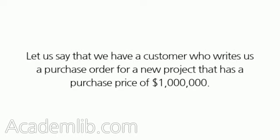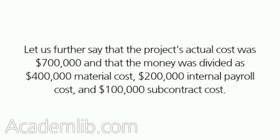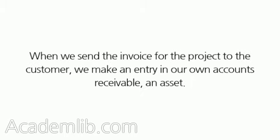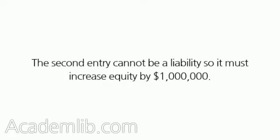Let us say that we have a customer who writes us a purchase order for a new project with a purchase price of $1,000,000. The project's actual cost was $700,000, divided as $400,000 material cost, $200,000 internal payroll cost, and $100,000 subcontract cost. Starting with the billing of the customer: when we send the invoice to the customer, we make an entry in our own accounts receivable, an asset. The second entry cannot be a liability, so it must increase equity by $1,000,000.